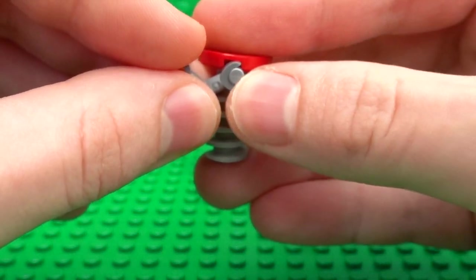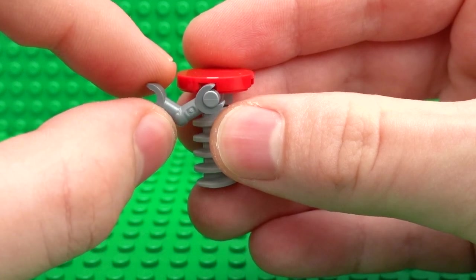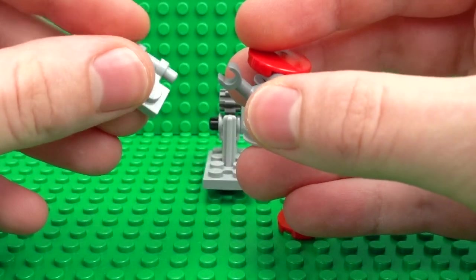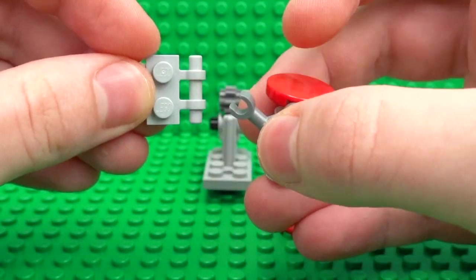Then attach this LEGO arm piece over the top of the bar there. You go, you can see why you need that extra little bit of space under there. And this is where you can attach the backrest which is just two pieces, one of these 1x2 plates.